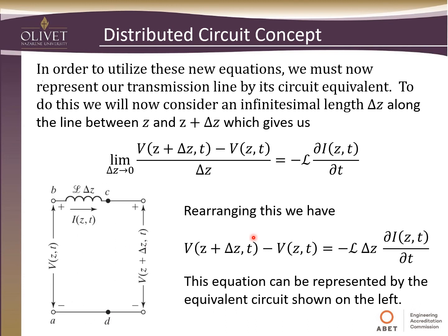In order to utilize these new equations, we must represent our transmission line by its circuit equivalent. To do this, we look at infinitesimal lengths in the z-direction. When we take the limit as delta-z goes to zero and rearrange, we see — looking at this equivalent model — that the voltage at this terminal minus the voltage here equals the inductance per unit length times delta-z times the time derivative of our current. This equation is represented by the equivalent circuit on the left.